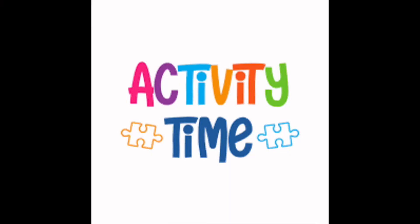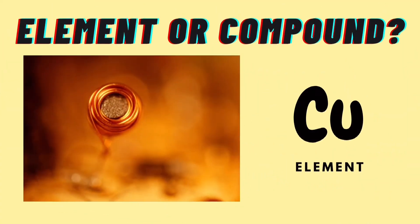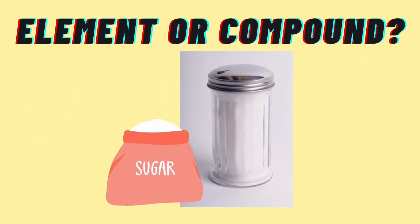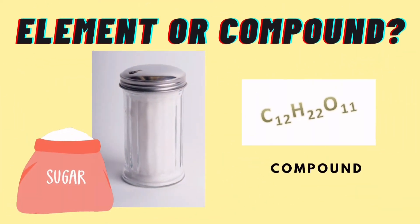The first one is copper. You got it right, copper is an element. Next, sugar. Yes, sugar is a compound. It has two or more elements, namely carbon, hydrogen, and oxygen.